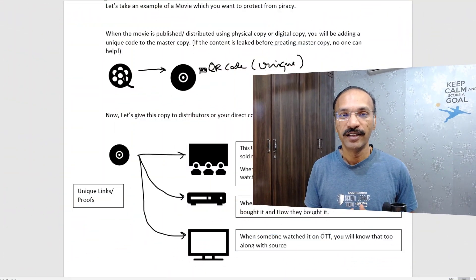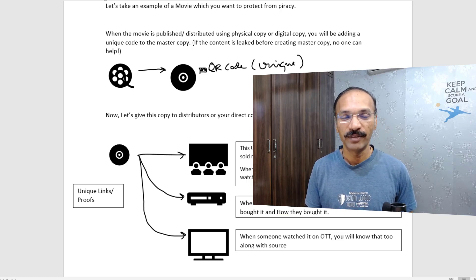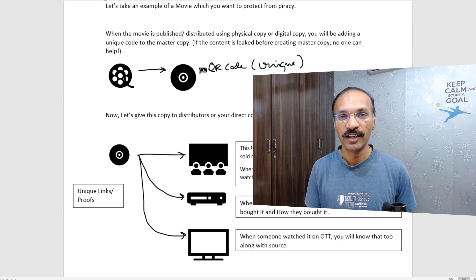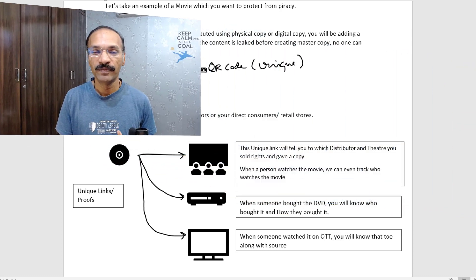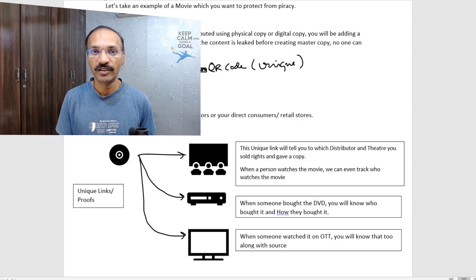In this video, we'll talk about how blockchain can solve the piracy issue. We'll go with an example so you can follow the flow. Let's assume a big production company is producing a movie. They own the master copyright because they are the producers. When the movie is done and published, they distribute it to theaters, DVD or CD makers, or an OTT platform.